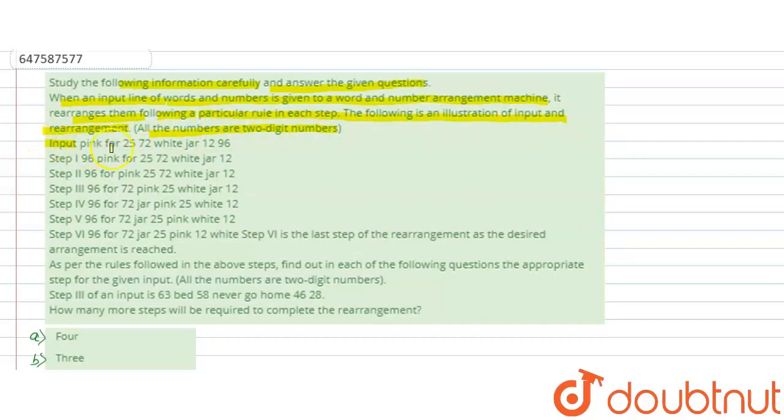All the numbers are two digit numbers. This input is given: pink 4, 25, 72, white, jar, 12 and 96. These steps rearrange following one particular rule. Step 6 is the last step of the rearrangement as the desired arrangement is reached. As per the rule followed in the above steps, find out the appropriate step for the given input.